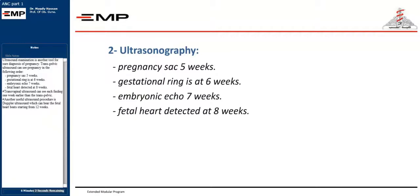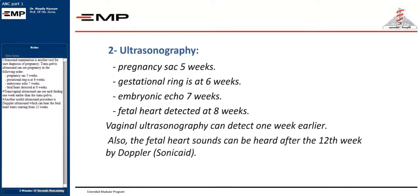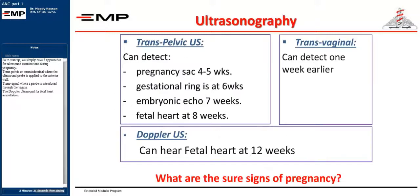Ultrasound examination is another tool for sure diagnosis of pregnancy. Transpelvic ultrasound can see pregnancy in the following order: pregnancy sac at 5 weeks, gestational ring at 6 weeks, embryonic echo at 7 weeks, fetal heart detected at 8 weeks. Transvaginal ultrasound can see each finding 1 week earlier than the transpelvic. Another useful ultrasound procedure is Doppler ultrasound, which can hear the fetal heartbeat starting from 12 weeks.